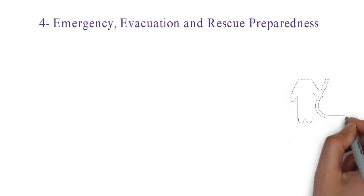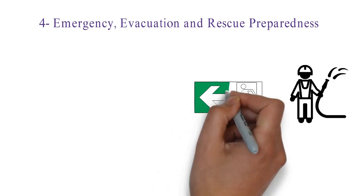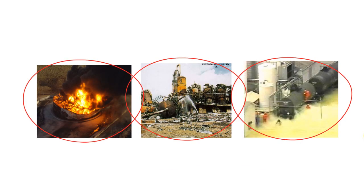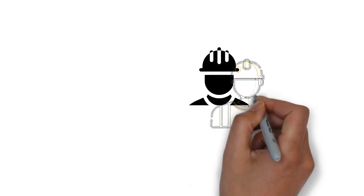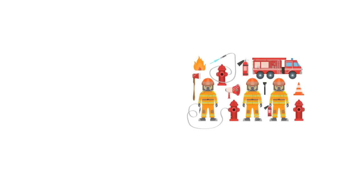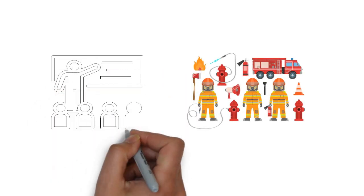In this part, the company describes the emergency, evacuation, and rescue plan within the installation, including all major accident hazards that have been identified from previous risk assessment studies. It also defines individual responsibilities during emergencies and the company's approach to ensure the effectiveness of this plan through providing the necessary equipment or personal training.